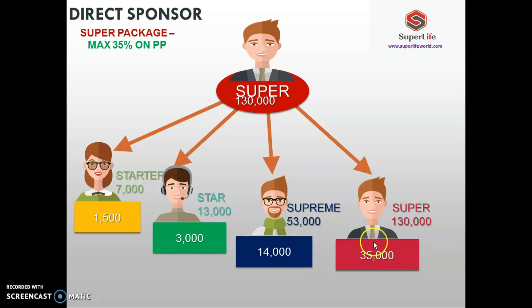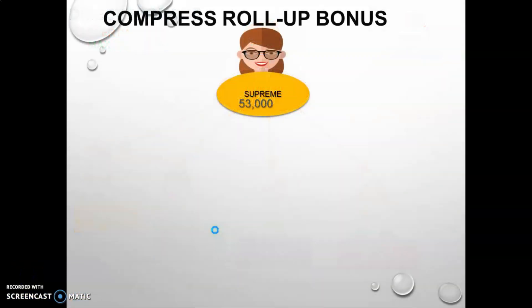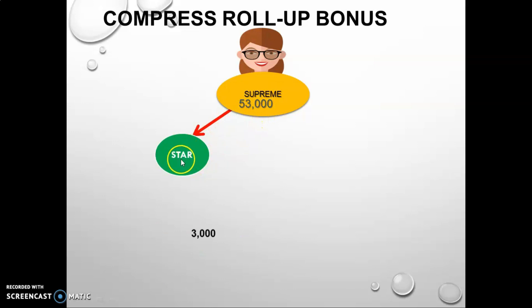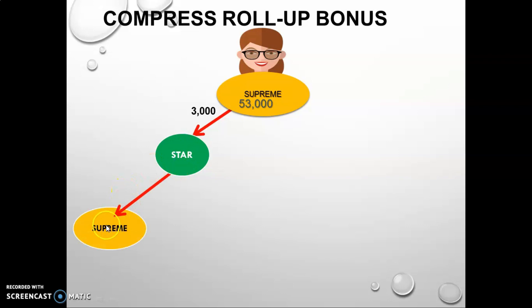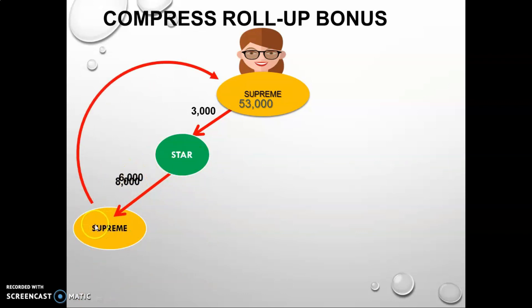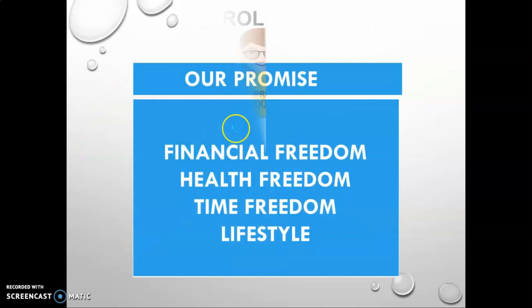The next bonus type is the Compressed Roll-Up Bonus. For example, if you are on Supreme and you refer a Star member, the company pays you 3,000 KES. If that Star member then refers a Supreme recruit, the Star member can only earn 6,000 KES of the 14,000 KES Supreme referral payout. The remaining 8,000 KES rolls up to the next higher-package member above — meaning being on a higher package is more beneficial.